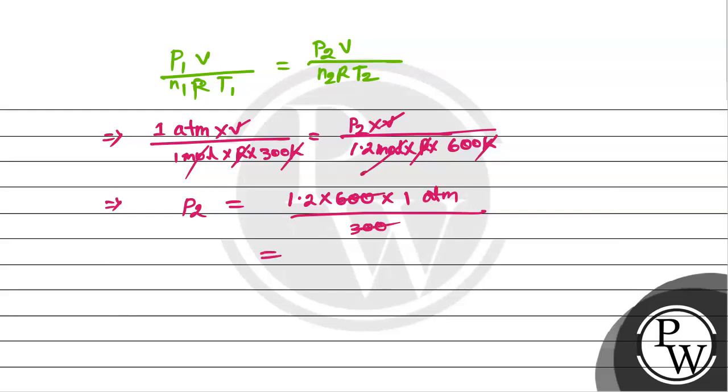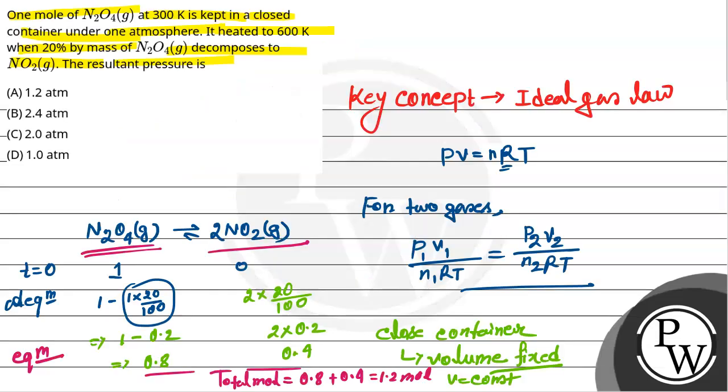So what will happen? 2.4 atm pressure. So our pressure is 2.4 atm. We will see which option - so our answer is option B, that is 2.4 atm. The resultant pressure will be 2.4 atm. I hope you will understand the solution very well. Thank you.